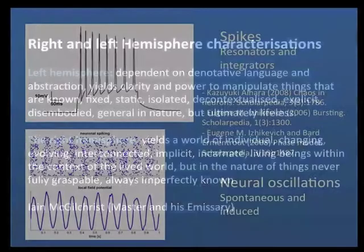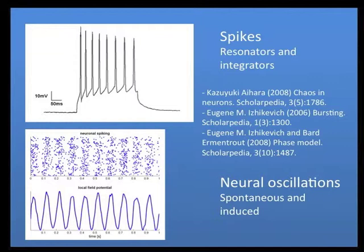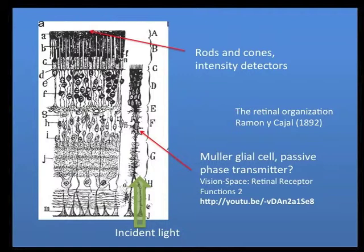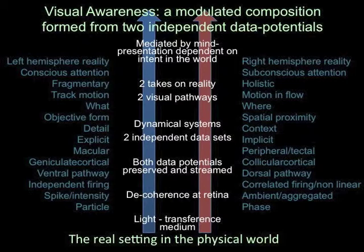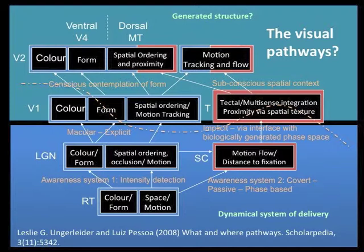We can speculate that the data potential from which explicit awareness is generated is characterized by the integrating profile, with the implicit being the resonating profile. We need to start to feel our way towards recognizing the inherent duality within signal propagation. Vision space indicates that the retina decoheres the data potential through both passive absorption dominated by the Müller glial cells, and then by intensity detection through the familiar rods and cones at the back of the membrane. The two visual pathways are characterized as a dorsal and a ventral stream, involving a low-frequency phase-based spatial impression of the scene being unfolded within the self-generating phase space structure, together with a restricted area of high-frequency detailed information derived from intensity measurements within macular vision, each being encoded separately, exploiting the functional possibilities inherent within each processing system.